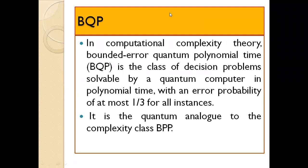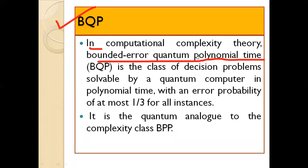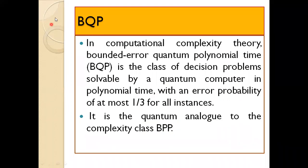Now let's come to the complexity analysis of quantum computation. You will encounter the term BQP, which represents quantum computation. In computational complexity theory, BQP — that is, Bounded Error Quantum Polynomial Time, remember: Bounded Error Quantum Polynomial Time — is the class of decision problems solvable by quantum computers in polynomial time, with an error probability of at most one-third for all instances. This is analogous to BPP; it is the quantum analog of the complexity class BPP.